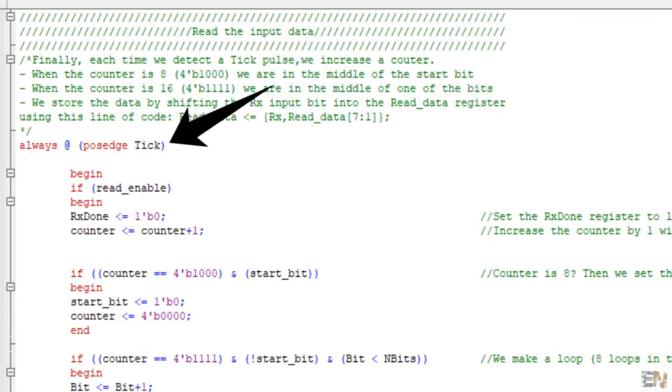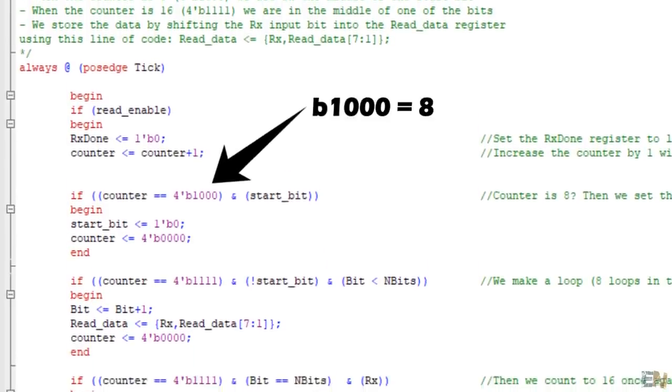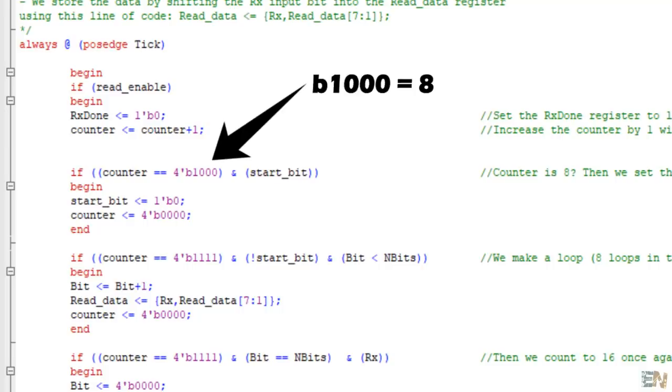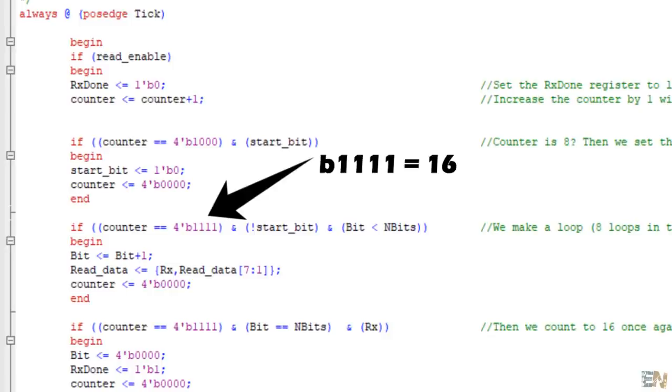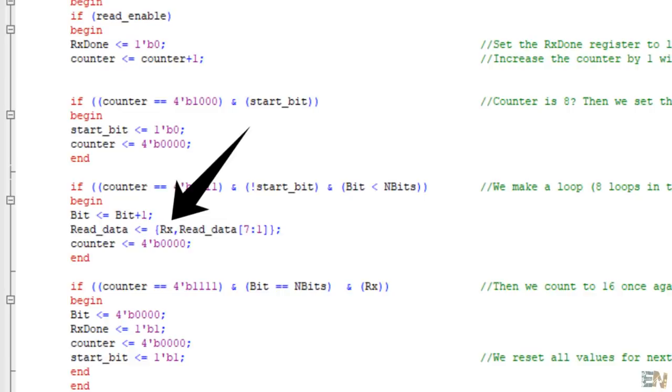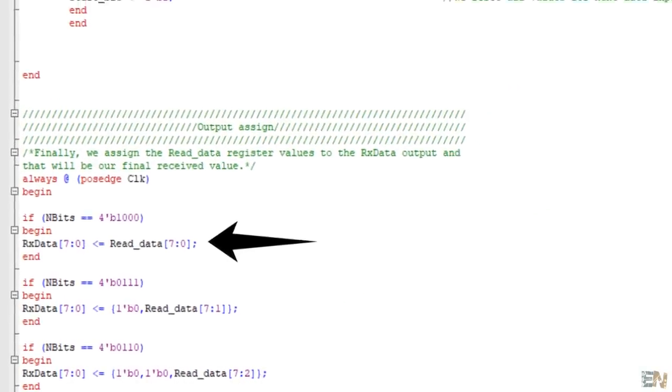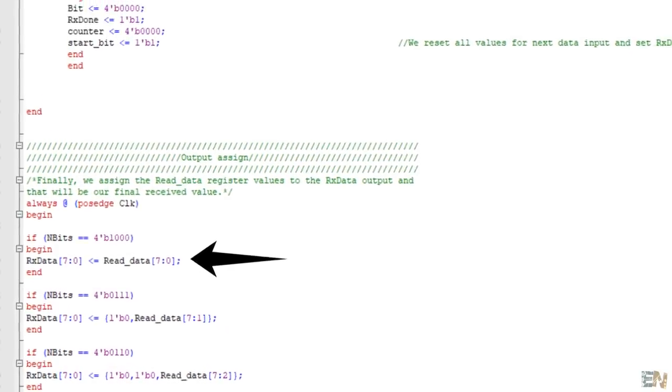Finally, with each tick pulse, we run this always and we start a counter. When we reach 8 with that counter, that means that we are in the middle of the start bit. Now each time we get the counter to 16, we save the input bit value into the read data register by shifting the RX input. We do this 8 times, till we get to the last bit. If the actual bit is equal to the amount of bits, we get to the stop bit and we are done. Finally, all there is to do is to assign the read data register to the RX data output and those will be our 8 bits of received data.